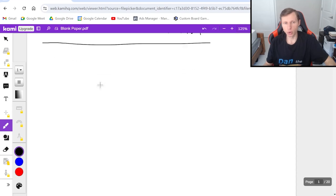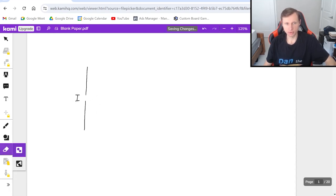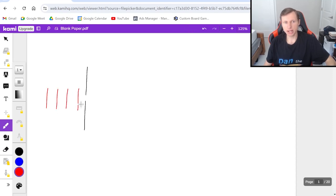The first thing I want to show you is what this experiment looks like. We have a tiny slit of width a, and light is coming in towards that slit. When it passes through, the light diffracts, which basically means it changes shape.